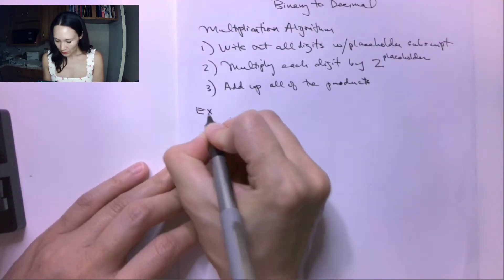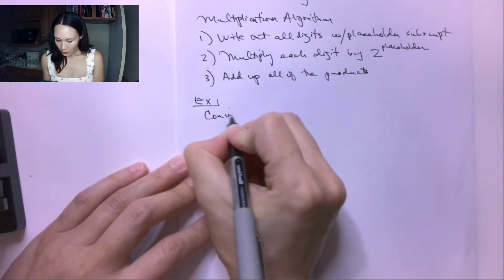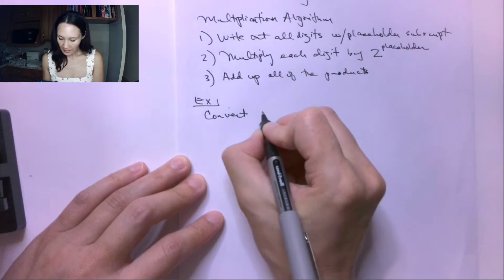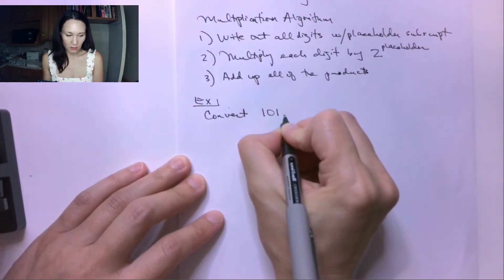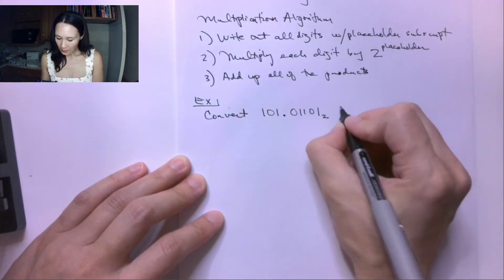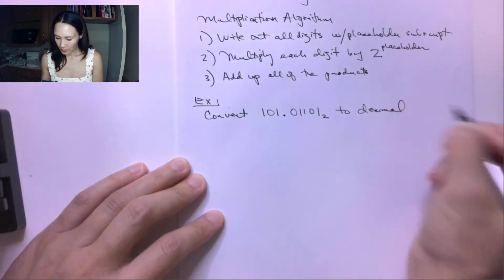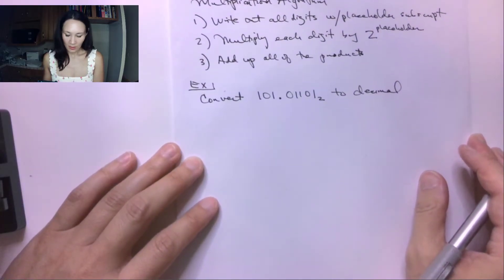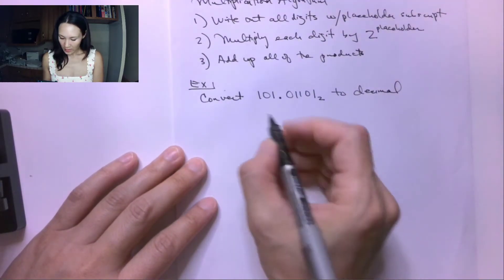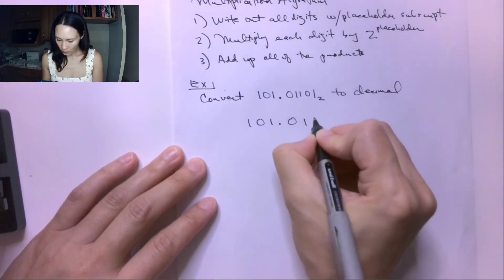So let me show you an example. Suppose we want to convert the binary number 101.01101 from binary to decimal. We want to go to base 10. The first thing we do is we write our number 101.01101.